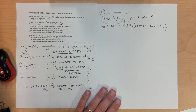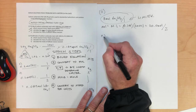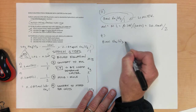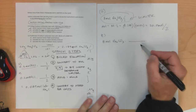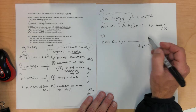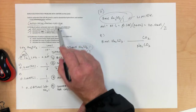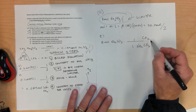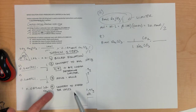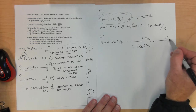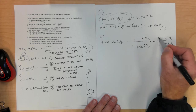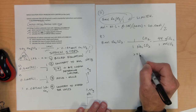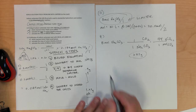Letter E: calculate the mass of carbon dioxide produced. Start with the limiter — 8 moles of Na2CO3. Do the mole-to-mole ratio: Na2CO3 has a coefficient of 1 and CO2 has a coefficient of 1, so we get 8 moles of CO2. Since it asks for mass, convert to grams: 8 moles times 44 grams per mole gives 352 grams of carbon dioxide produced.